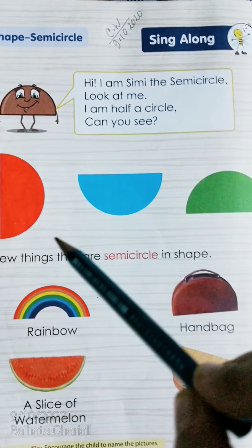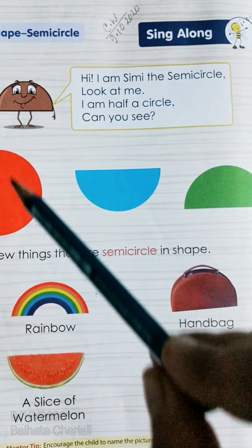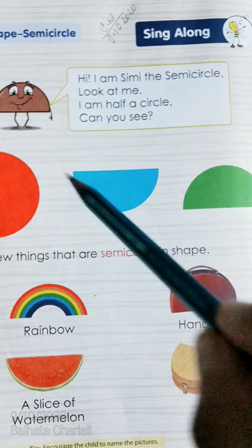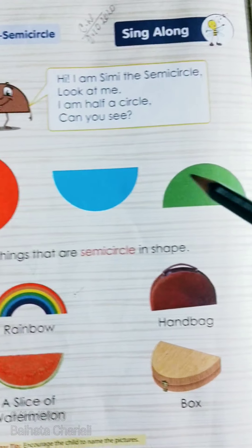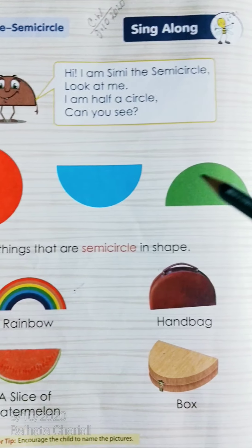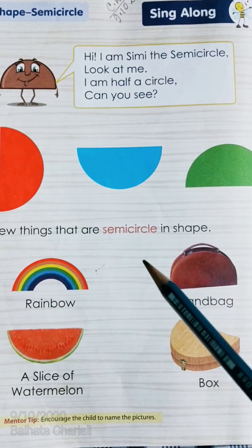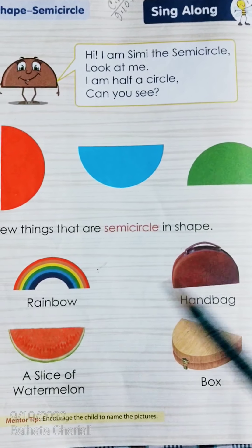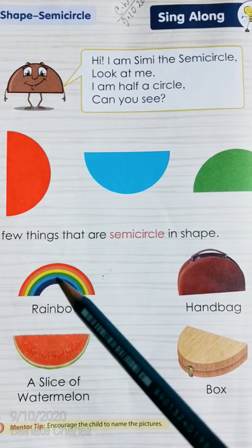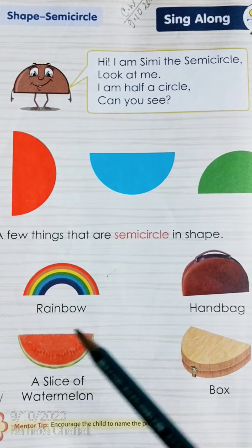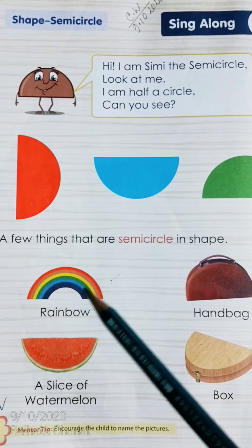Now there are a few things that are semi-circle in shape. This is semi-circle shape. This is again semi-circle because it is a half circle. A few things that are semi-circle in shape: a rainbow, which we know or have seen — this is the picture of the rainbow and it is in semi-circle shape.